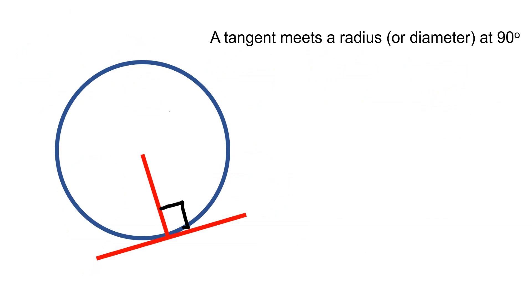The first circle theorem is that a tangent meets a radius or diameter at 90 degrees. A tangent is a line that only touches the circle in one place, and the angle formed between them is always 90 degrees.